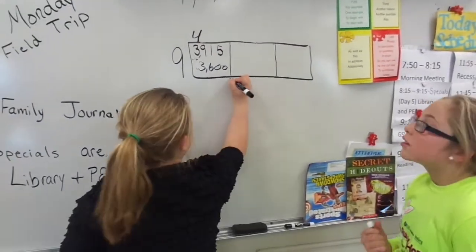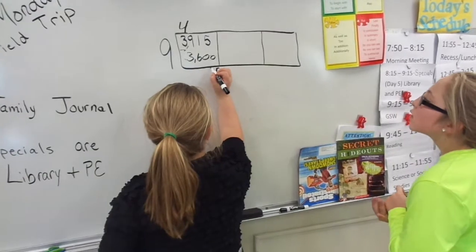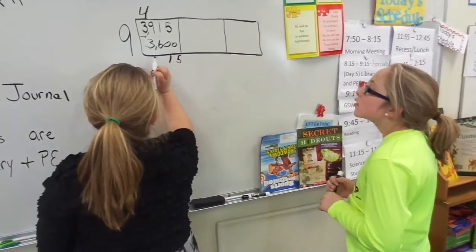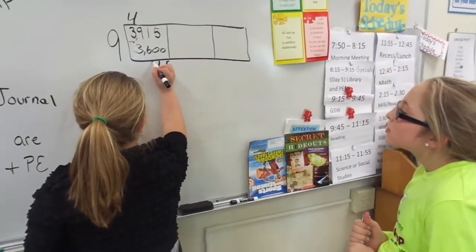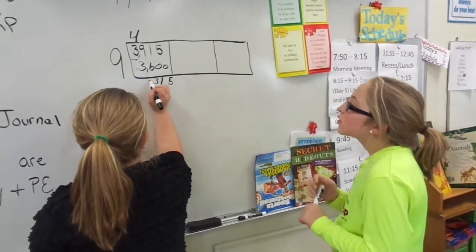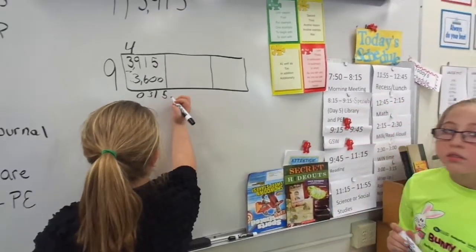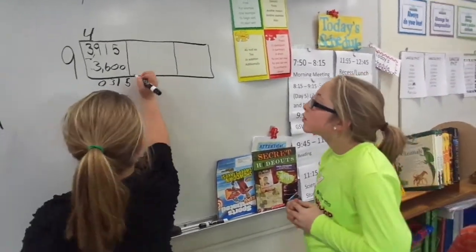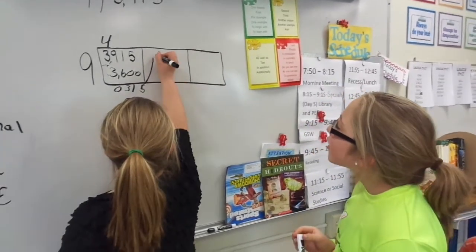So 5 minus 0 is 5, 1 minus 0 is 1, 9 minus 6 is 3. So now we're going to move that 315 to the middle box because that's in the tens. Perfect. Nice, Cadence.